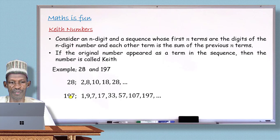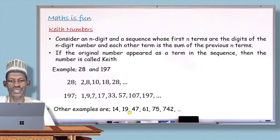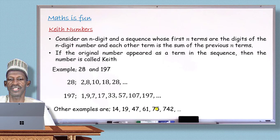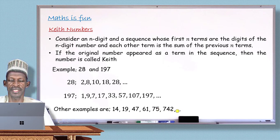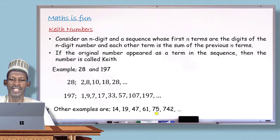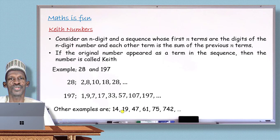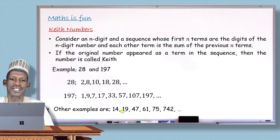Other examples of case numbers include 14, 1947, 75, 742, and many others. You can try them yourself to verify whether they are case numbers or not. With this I have come to the end of this lesson, and we will see more of these amazing things in mathematics in our next lessons.